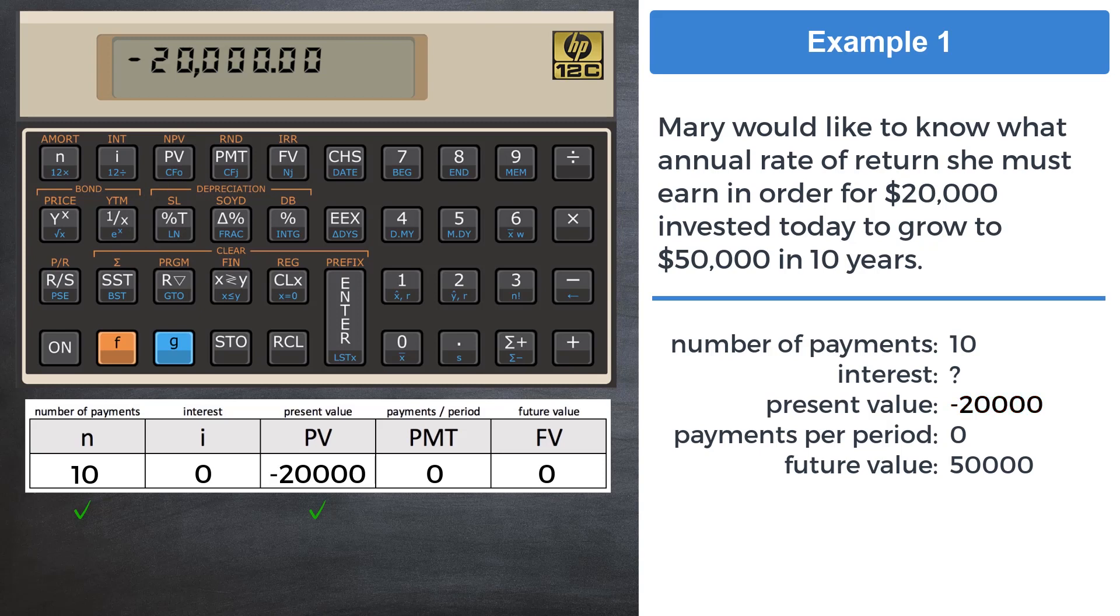Entering the variable 50,000 into the future value register is more straightforward. This is money flowing back to Mary, so it will be entered as is, as a positive number. Take note at this point, the payments per period register is set to a zero value. Since putting in zero will not change it, some analysts will skip those keystrokes and proceed directly to calculating interest, which is a slight time saver and perfectly valid. For the purposes of this training module and for the sake of completeness, let's enter zero into that financial register by keying in a zero and pressing the PMT key.